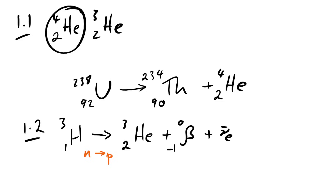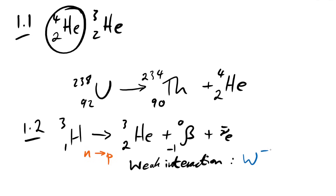This is a weak interaction because there are leptons involved — if electrons are involved it has to be a weak interaction. We have negativeness being taken away from the tritium nucleus, so therefore it's a W minus boson.